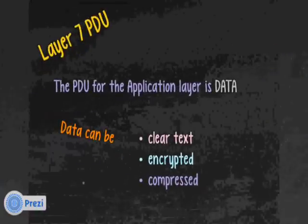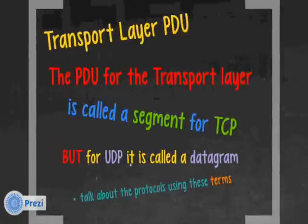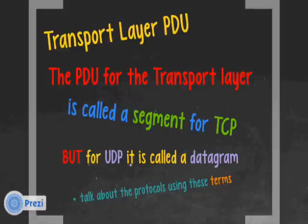Layer 7's PDU is easy — it's data. When we talk about data, we know we're talking about layer 7, and that data can be clear text, encrypted, or compressed. The transport layer PDU is called a segment for TCP, so when we're talking about Transmission Control Protocol we're talking about segments. For UDP — User Datagram Protocol — it is called a datagram. So if I'm talking about a datagram, I'm talking about UDP; if I'm talking about a segment, I'm talking about TCP.